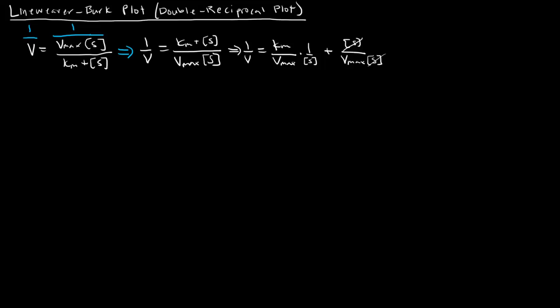What we have now is we can simplify this portion here by knocking off these substrate concentrations because they cancel out. And then what we end up being left with is the following. We get 1 over V equals Km over Vmax times 1 over the substrate concentration plus what we're left with here which is 1 over the Vmax.